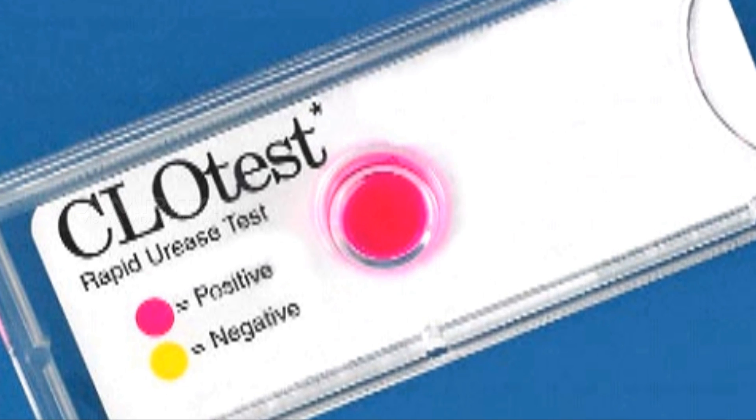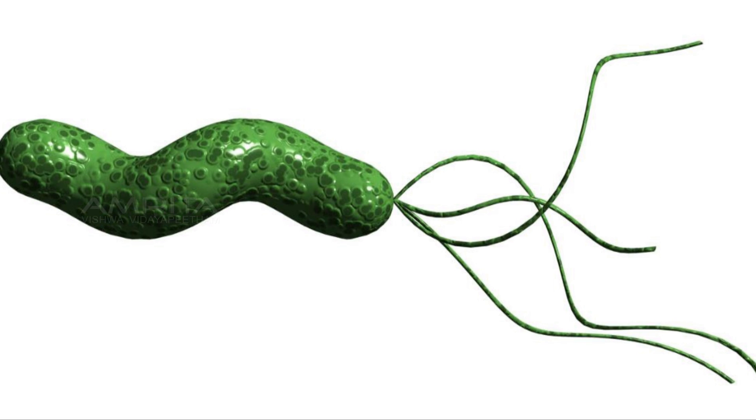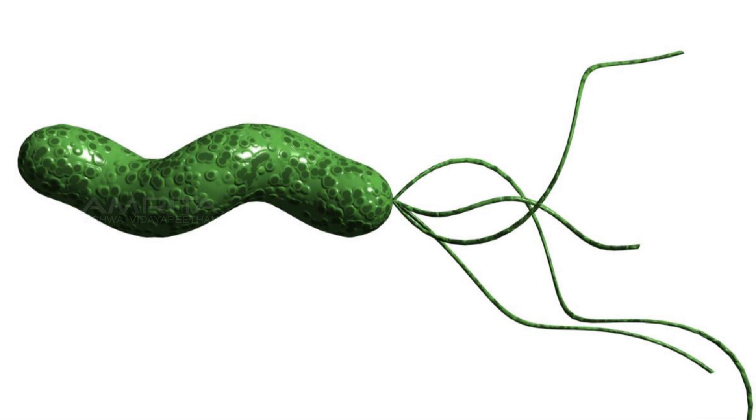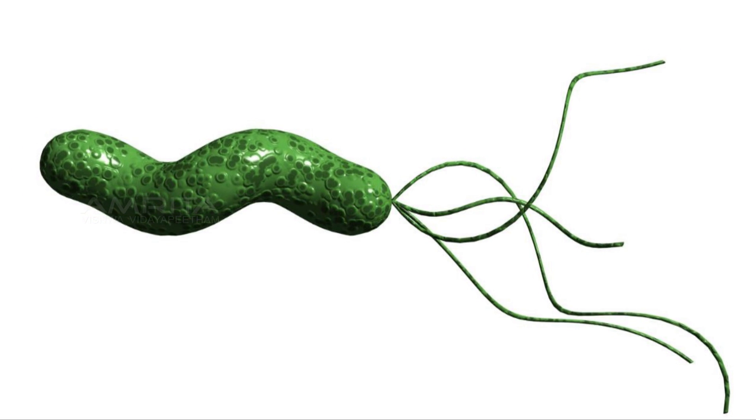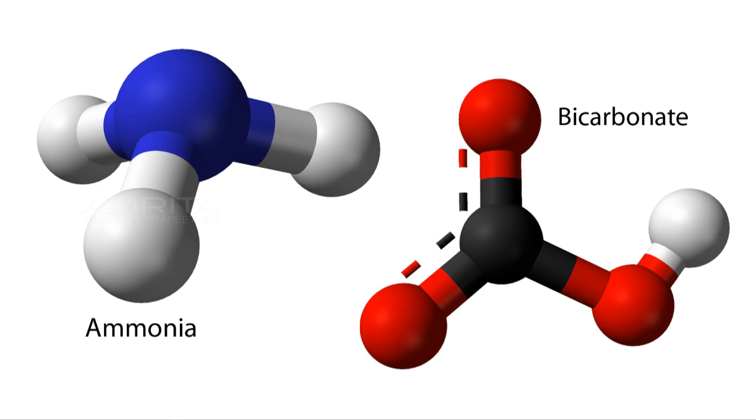Rapid urease test, also known as CLO test, is a rapid diagnostic test for Helicobacter pylori. The basis of the test is the ability of Helicobacter pylori to secrete the urease enzyme, which catalyzes the conversion of urea to ammonia and bicarbonate.